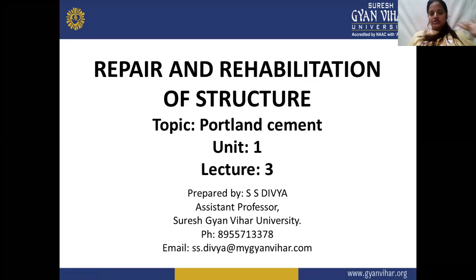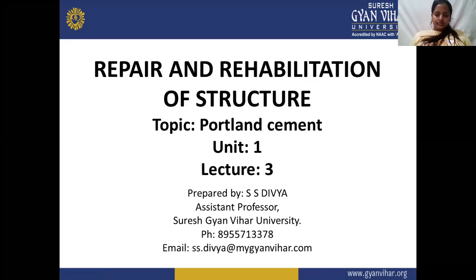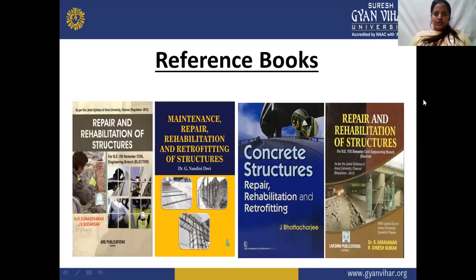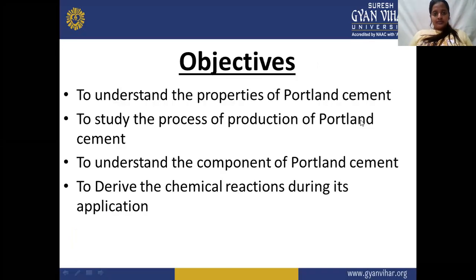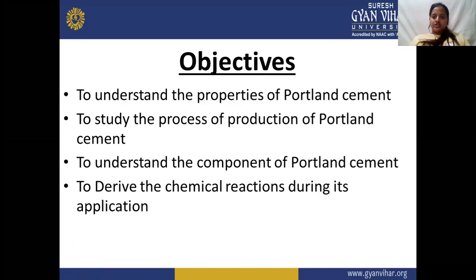Hello everyone. The name of the subject is Repair and Rehabilitation of Sculpture, and today's topic is Portland Cement, which is a part of Unit 1. The objectives are: to understand the properties of Portland Cement, to study the process of production, to understand the components, and to derive the chemical reactions during its application.